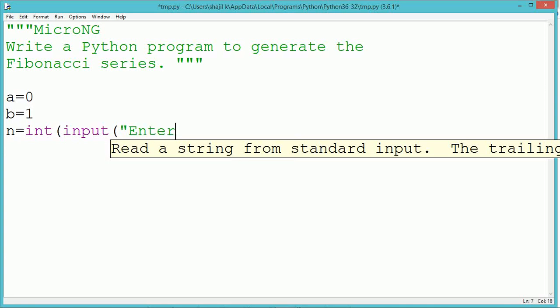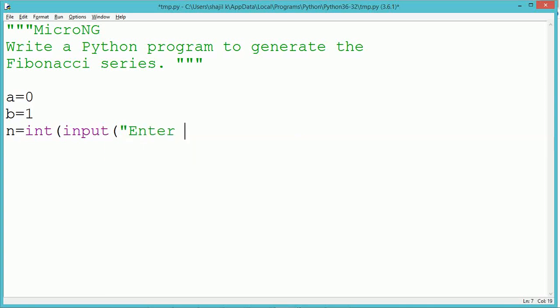Each successor value of a Fibonacci series will be the sum of the two previous values. That means the third value will be the sum of second and first.